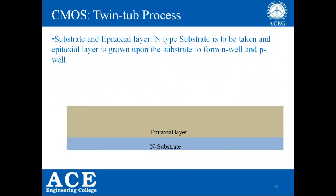Coming to the first step, here we are going to take an N-substrate. From the silicon wafer manufacturing process, we get pure silicon. If we dope it with N-type impurities — Group 5A elements — we get an N-type substrate. After obtaining this N-type substrate, we grow it further. This grown layer is called the epitaxial layer. In this epitaxial layer only, we will form the N-well and P-well.